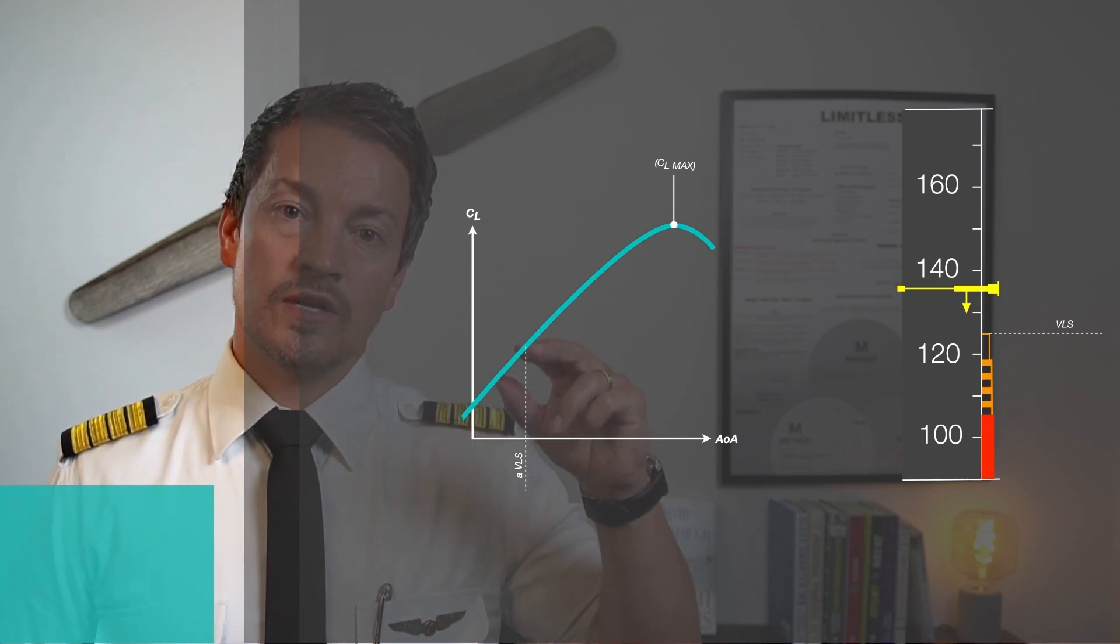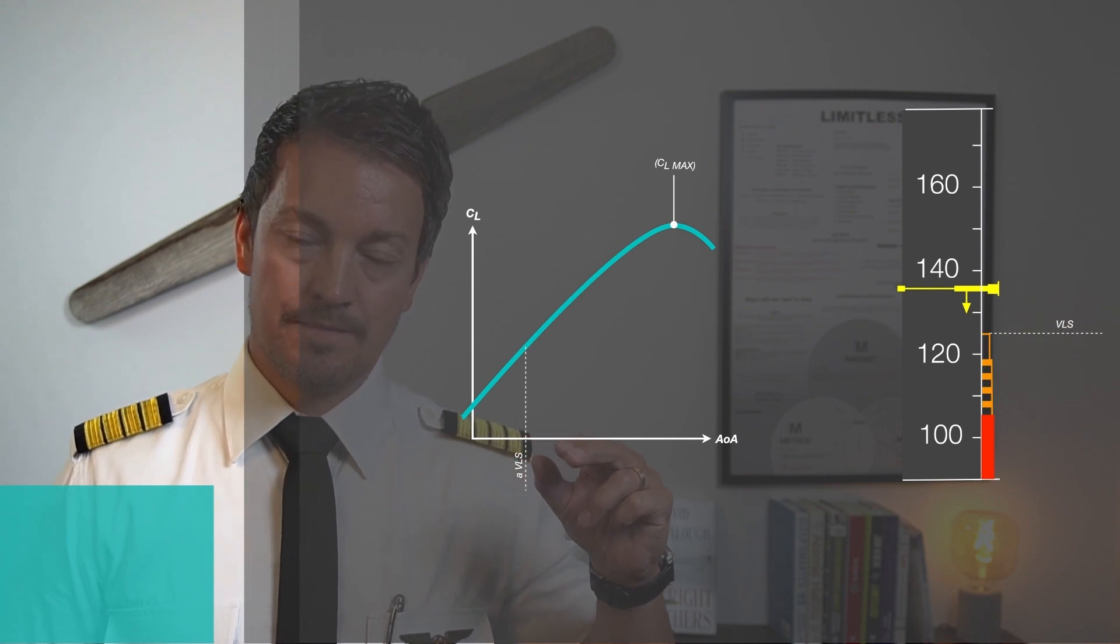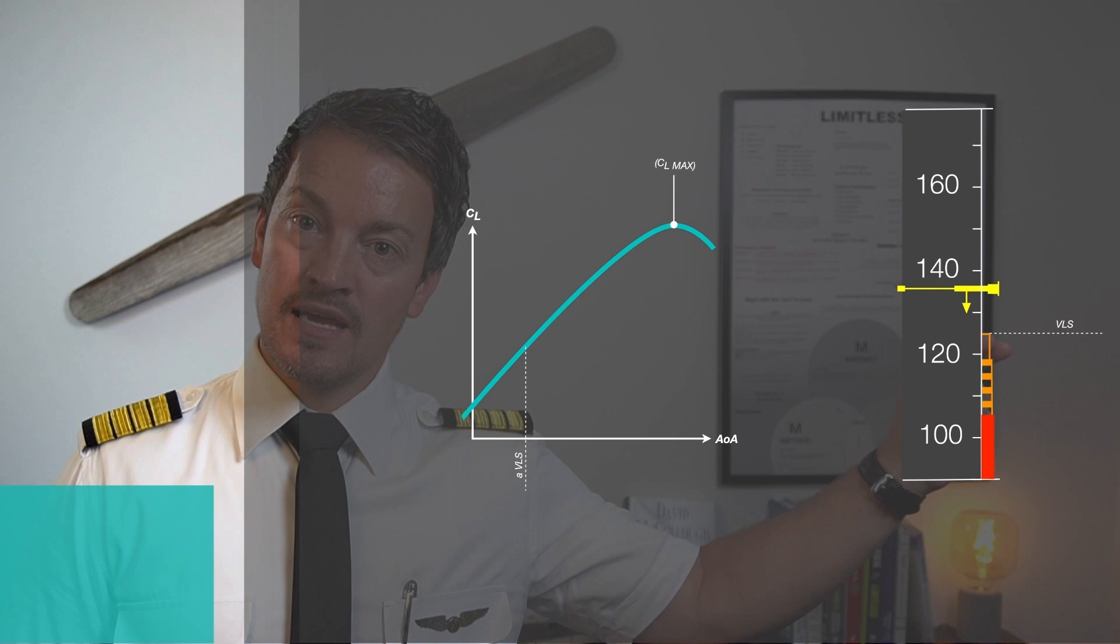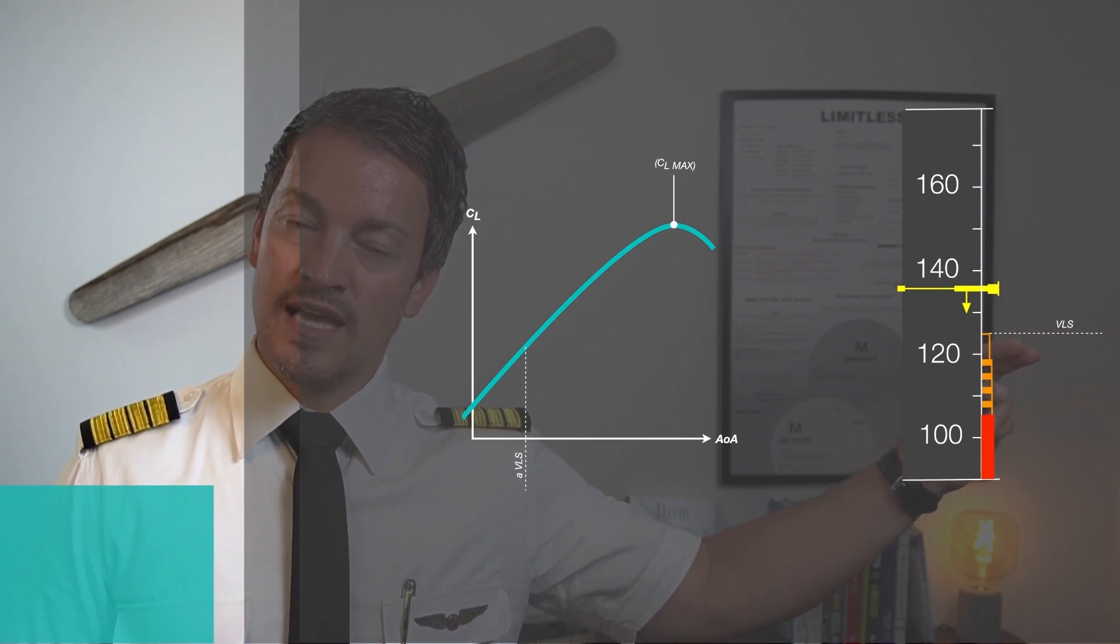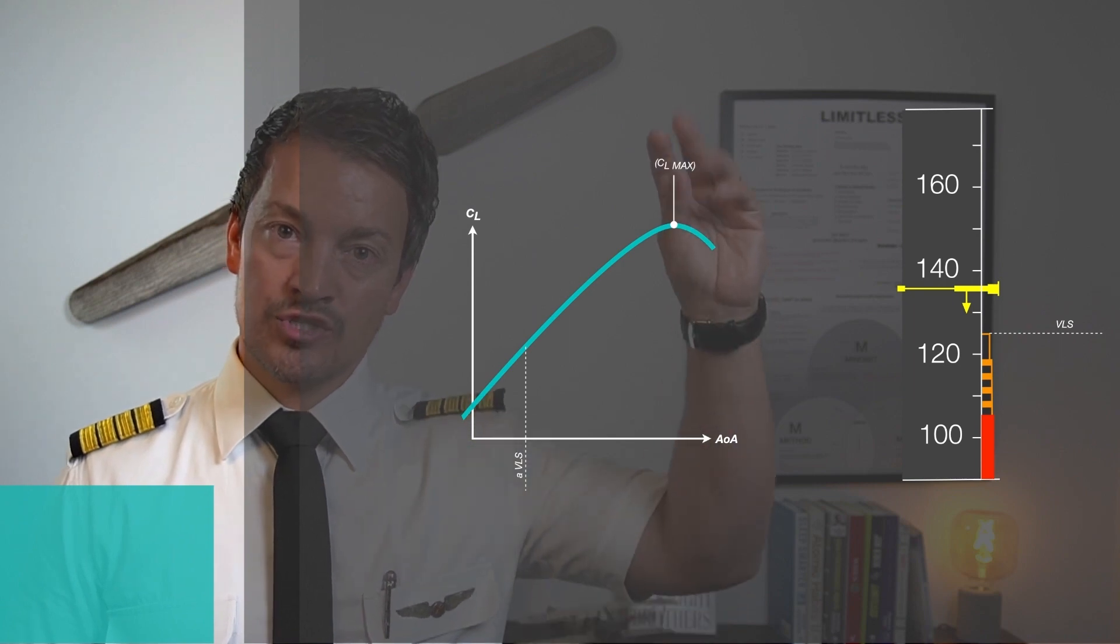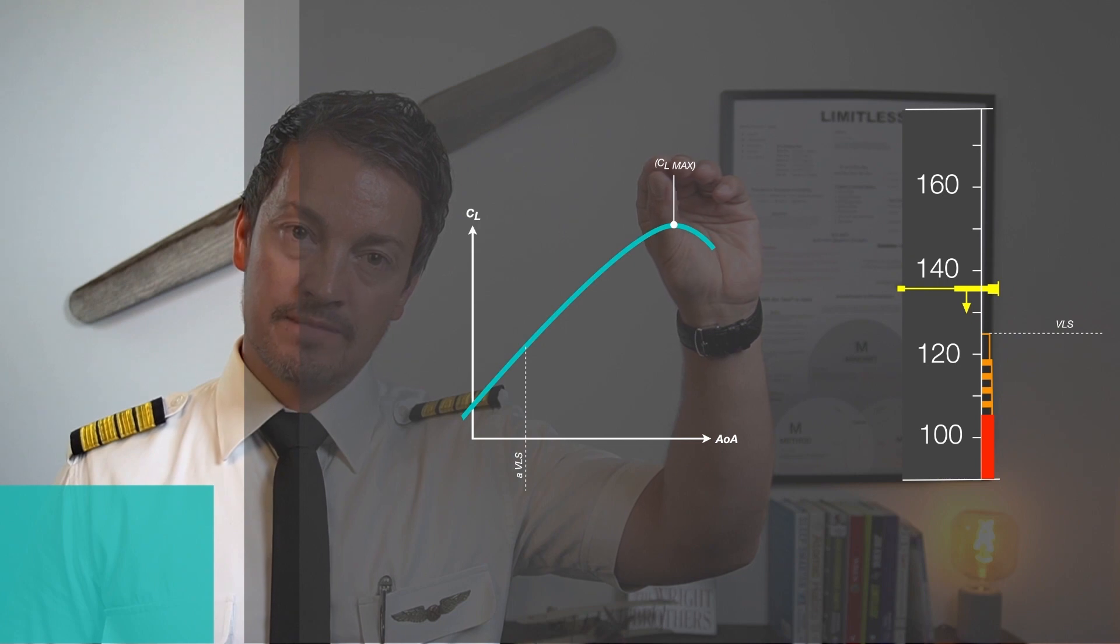The first speed is the VLS, the lowest selectable speed. It is represented on my speed tape as the upper portion of the amber pole. It is the lowest speed that I can also select on my FCU window on my glareshield.